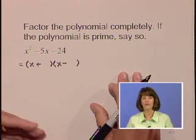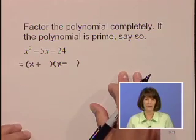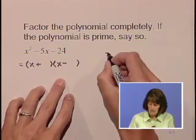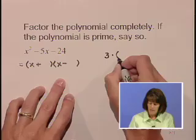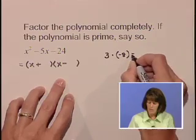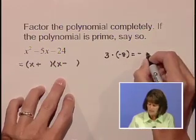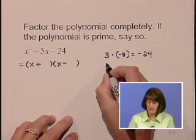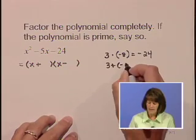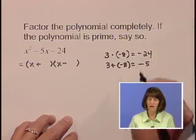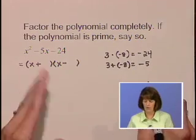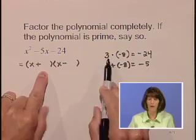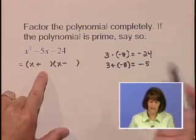As we work our way using trial and error through factors of negative 24, we can see that if we use a 3 times a negative 8, we will indeed get a product of negative 24 and 3 plus that negative 8 is going to give us our sum of negative 5.